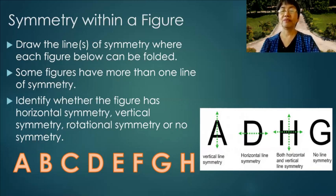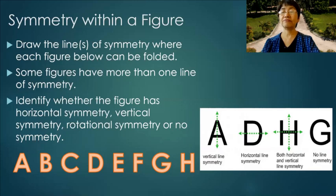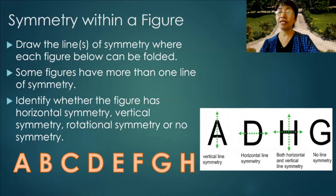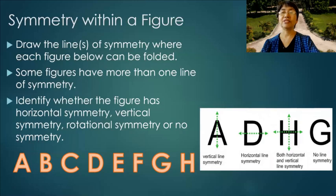Let's try a few of these letters. Letter A has a vertical line of symmetry. Letter D has a horizontal line of symmetry. Letter H has both horizontal and vertical line symmetry. But letter G does not have any line of symmetry.